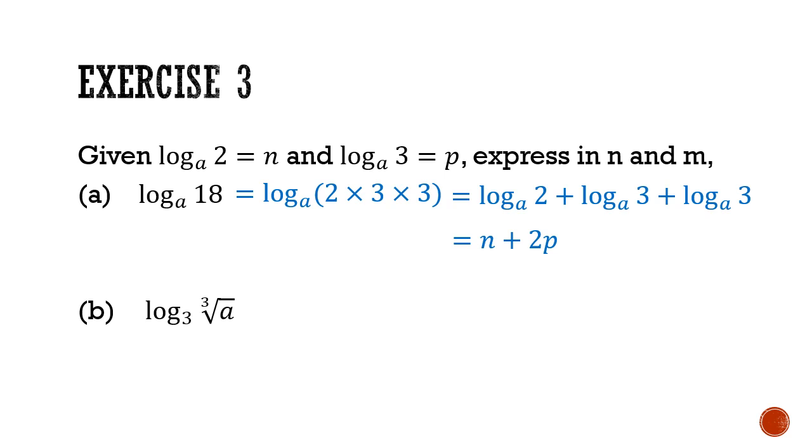For part b, we can take out the cube root using the third law because the cube root is just a power of 1 third. So we'll get a coefficient of 1 third. Now, the base is not a so we can do a reciprocal here. So I'll get 1 third and the log base 3 of a will become 1 over log base a of 3. And I can just replace that and that will get 1 over 3p.